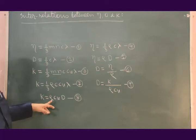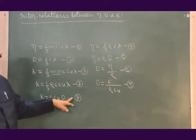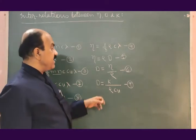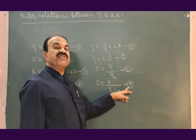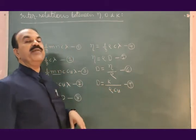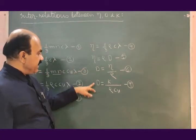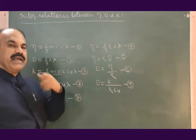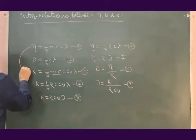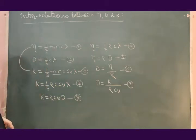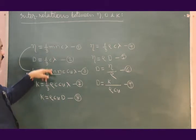Equation 8 may further be written as D = K / (rho·cv), equation number 9. That is, if K, rho and cv are known, using equation 9, D can be found. These two are relations between eta and D; these two are relations between K and D.